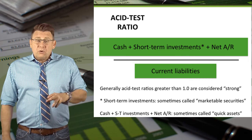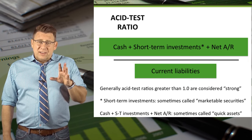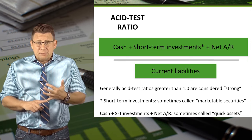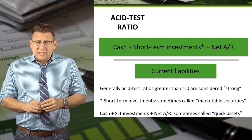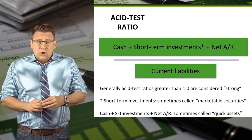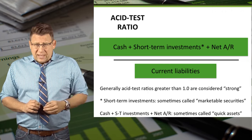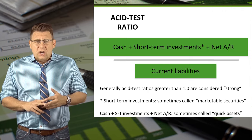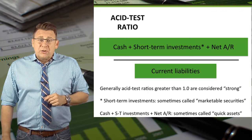Notice that the current assets that don't turn to cash, like supplies and other prepaid expenses, or might slowly turn to cash, like inventory, are excluded from the numerator.